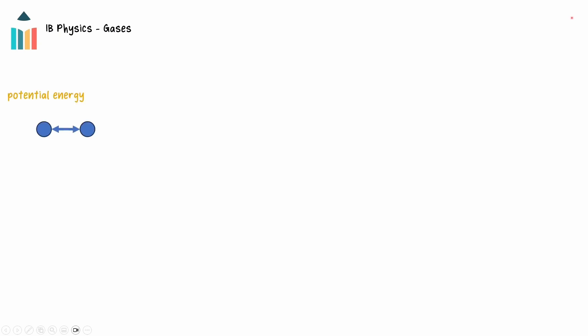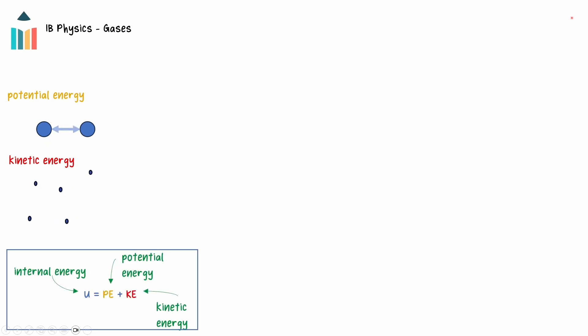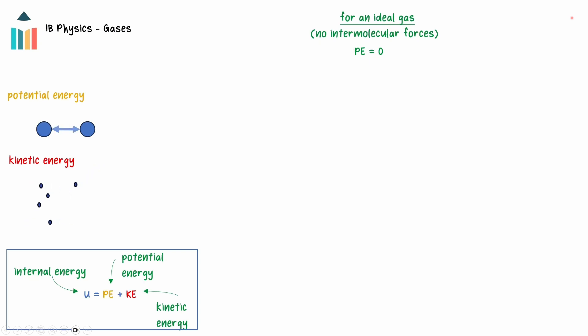Particles of a real gas contain potential energy in intermolecular bonds and kinetic energy in their movement. The total energy of the particles is called the internal energy — the sum of the total potential and kinetic energy. Since one of the assumptions for an ideal gas is that intermolecular forces are negligible, the potential energy of ideal gases is considered to be zero, and so the internal energy of an ideal gas is only the average kinetic energy of the particles.